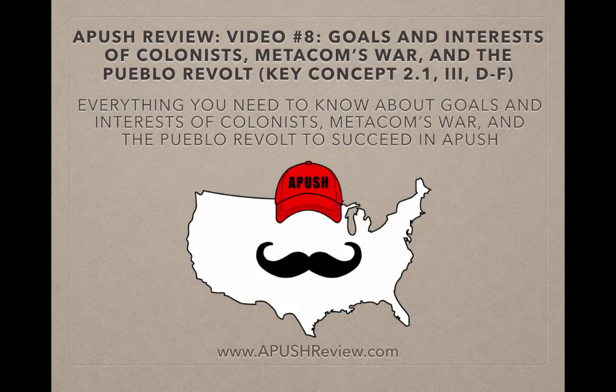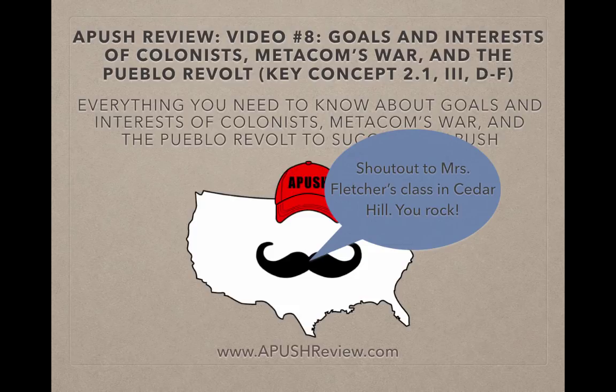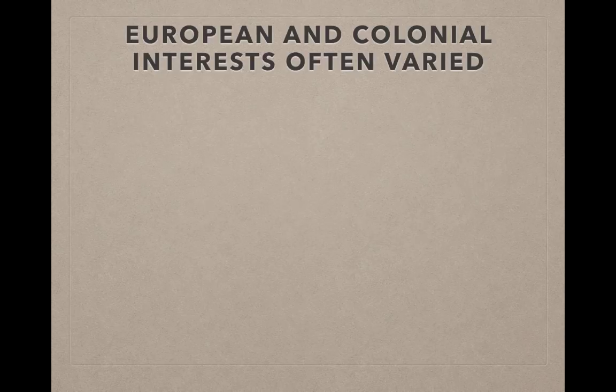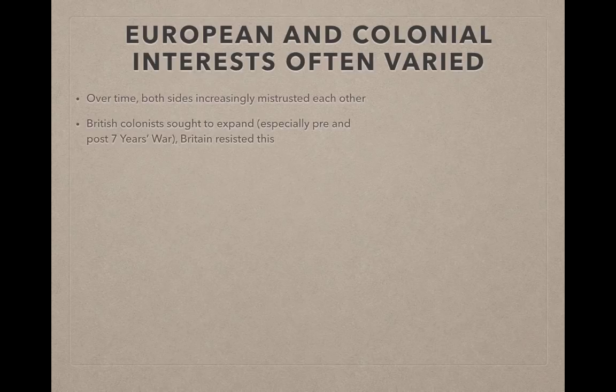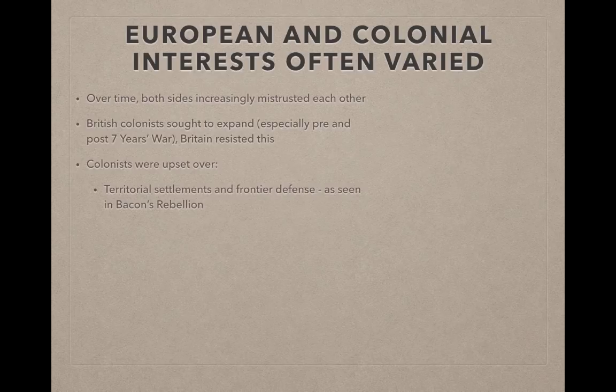Before I begin, shoutout to Mrs. Fletcher's class in Cedar Hill — you guys rock, thank you for watching, and best of luck this year. Europeans and colonial interests often varied. The goals and interests of Europe were different from the colonies, and over time both sides increasingly began to mistrust each other. The British colonists sought to expand — this is especially true pre and post the Seven Years War of 1754 to 1763 — and Britain resisted, wanting to keep them in a smaller area. More colonists were upset over things like territorial settlements and frontier defense.